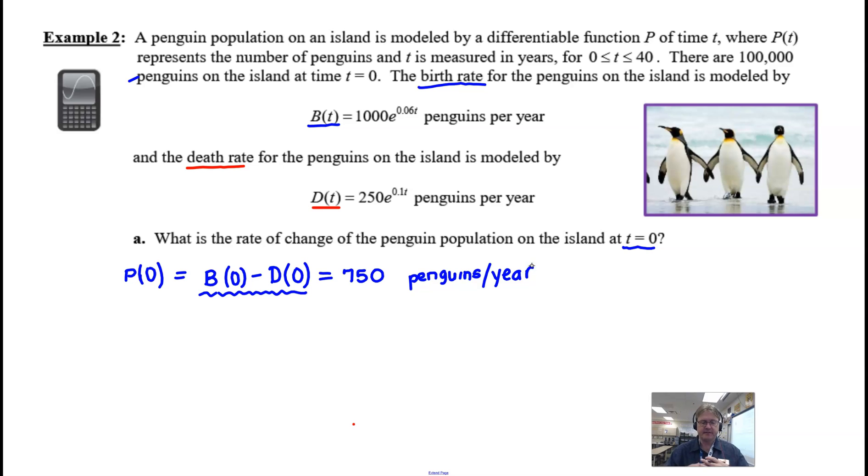And basically from a general standpoint, what really is happening on this island is right at the very beginning that this study is being done and we have these birth rates and death rates, right at the beginning we can pretty much guarantee that the population on the island is changing by that 750 penguins per year. That's certainly something that isn't going to necessarily continue. It depends on the relationship between B and D as time goes on. This could certainly fluctuate.